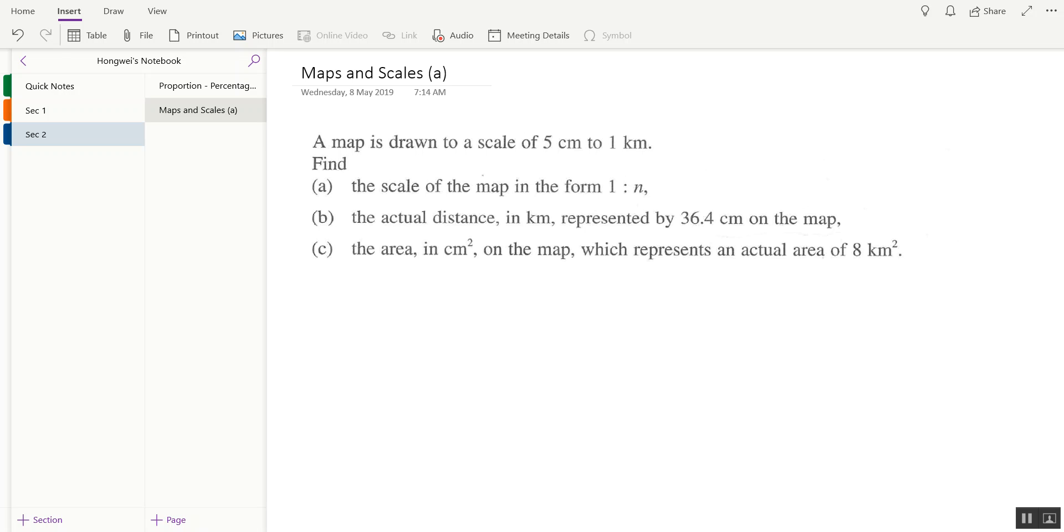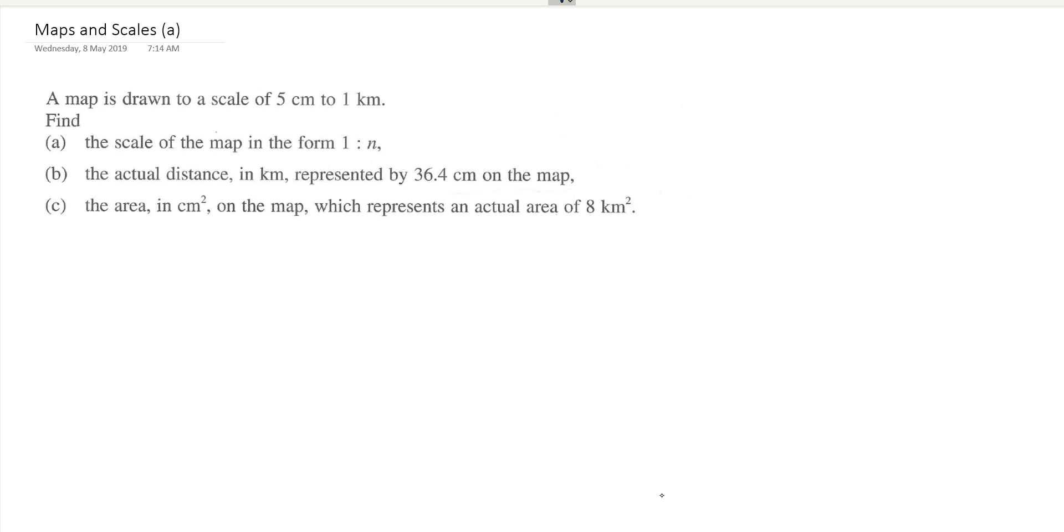Okay, so this is a maps and scale question about finding the ratio. First we will write that 5 cm is to 1 km, all right.